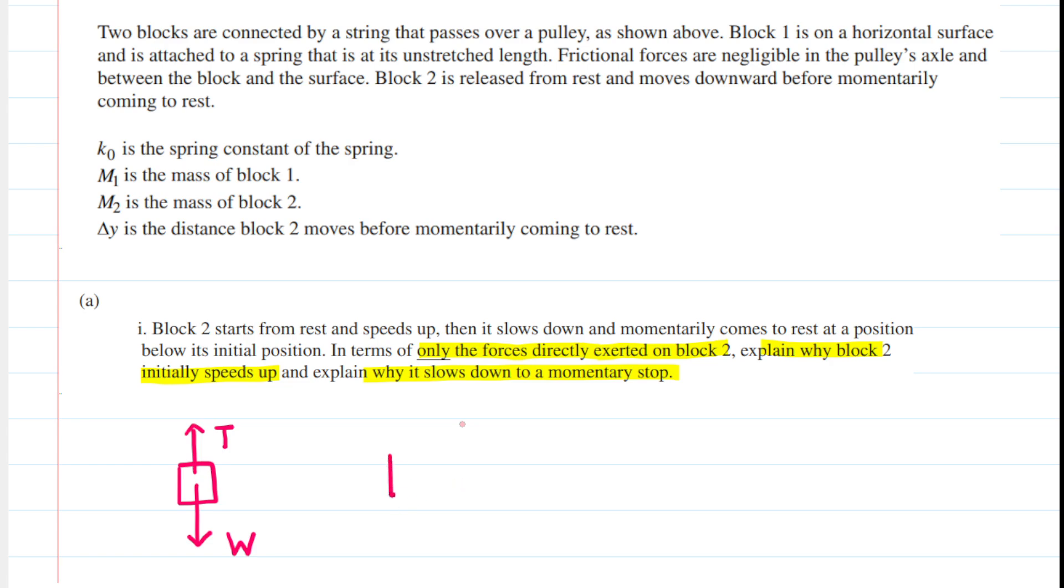So, for instance, when the block speeds up, that means it's accelerating because the gravitational force is going to have a larger magnitude than the tension force. But eventually, the tension force develops a larger magnitude than the gravitational force. So later on, the free body diagram would switch to showing that the tension force is larger in magnitude than the gravitational force.